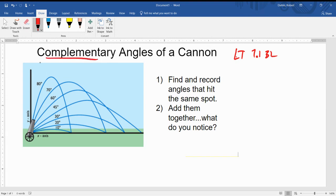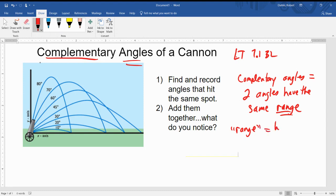So first off, we need to know what is a complementary angle. By definition for physics, a complementary angle means two angles that will hit or have the same range for a projectile. And the key word there is range. Remember when we say range for a projectile, range just means how far away will it land or will it hit the ground.